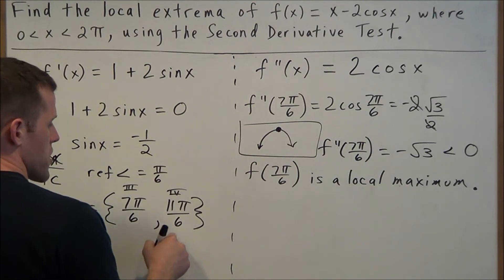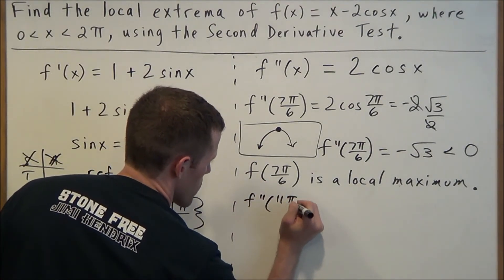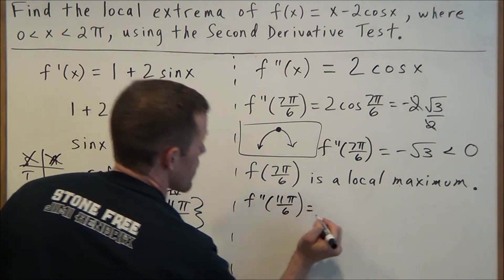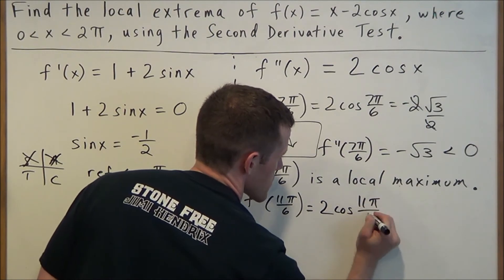So then to close this problem out, now we have to check 11π/6. So we're going to plug this into our second derivative. And we'll have 2cos(11π/6).